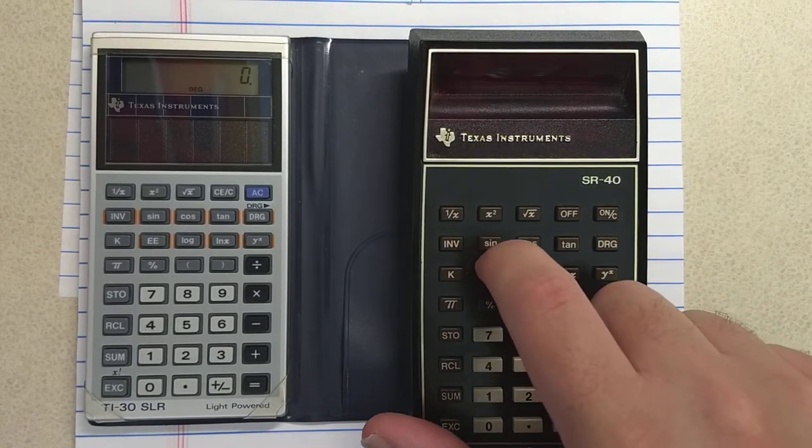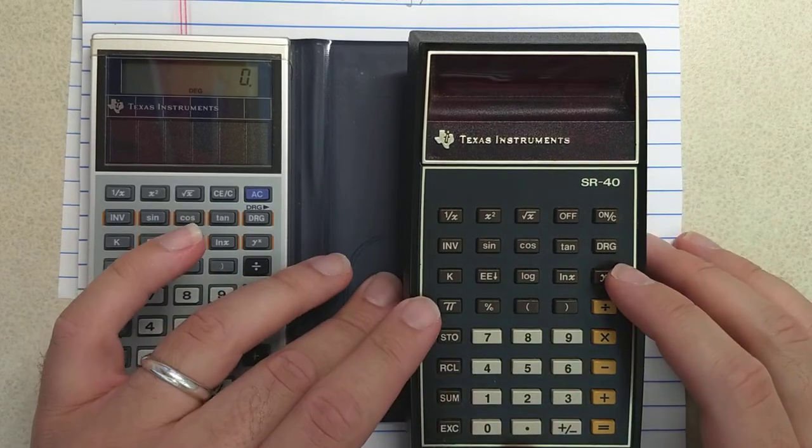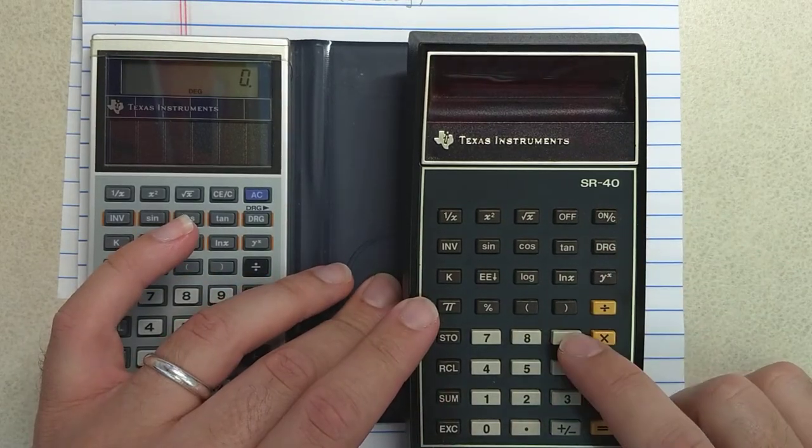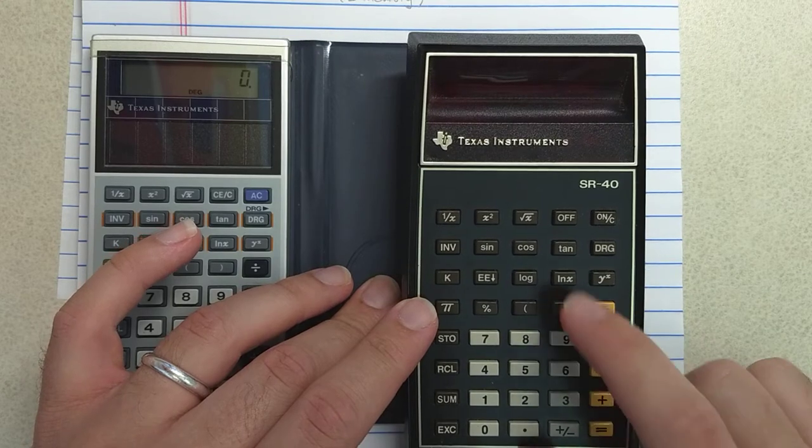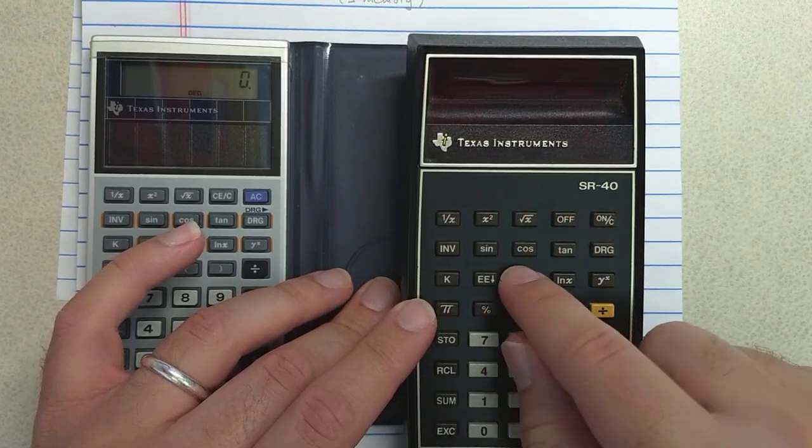Or actually, I think that somehow the lettering there is molded into the key, whereas the TI-30 has the description of the function above the key and the keys themselves are blank. It's kind of a cheaper keyboard.